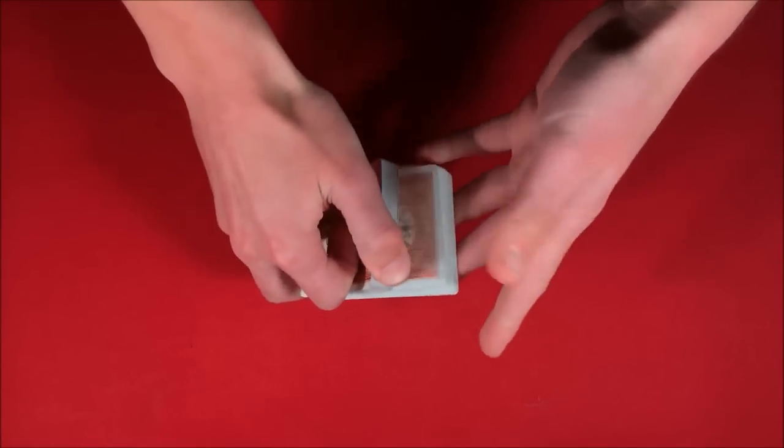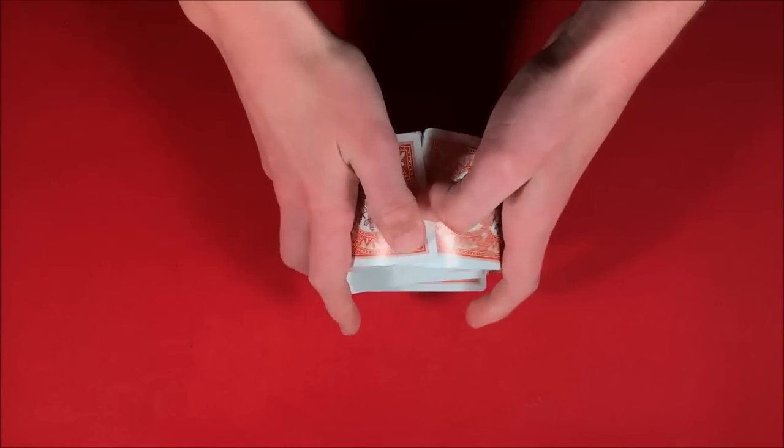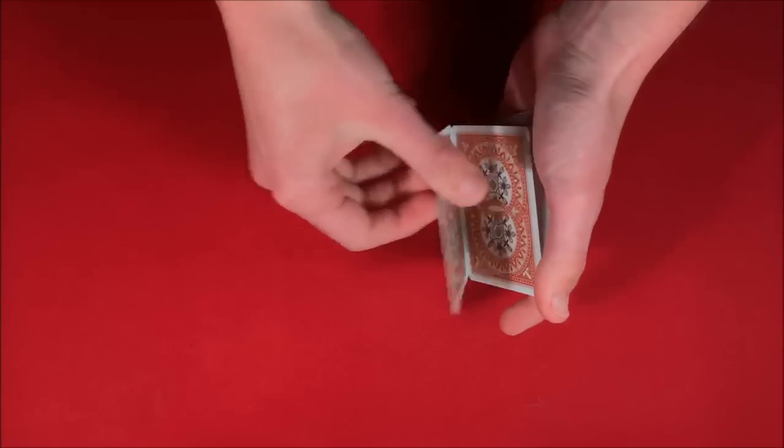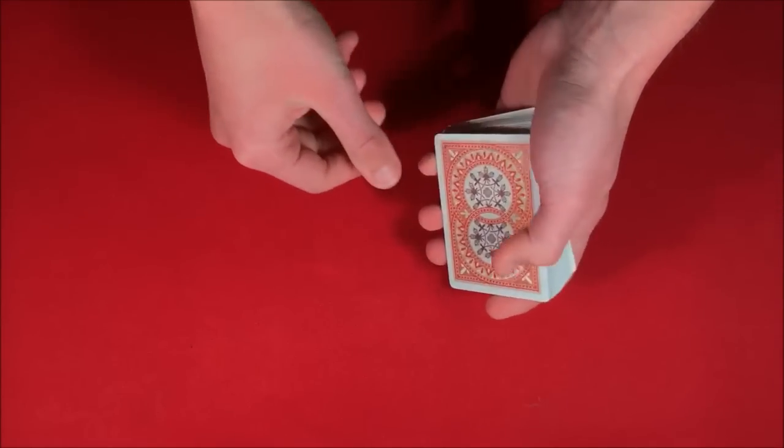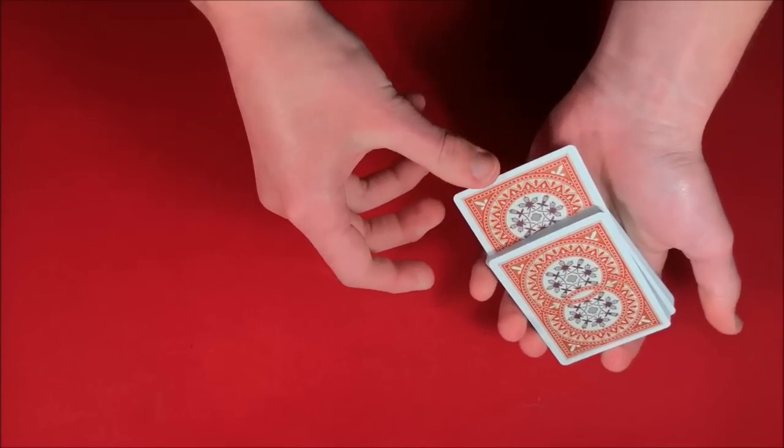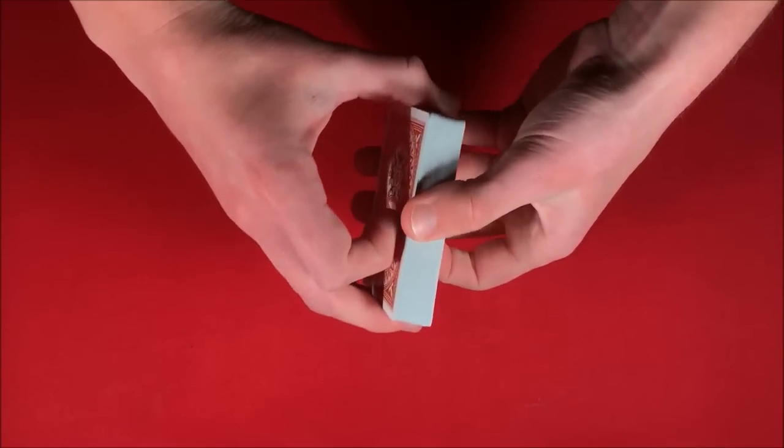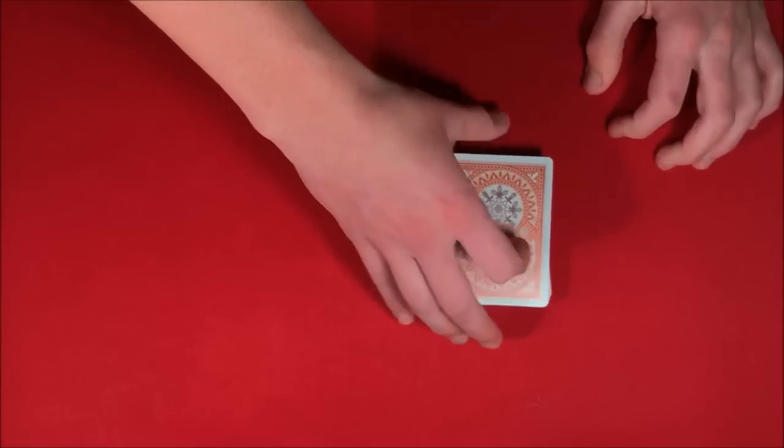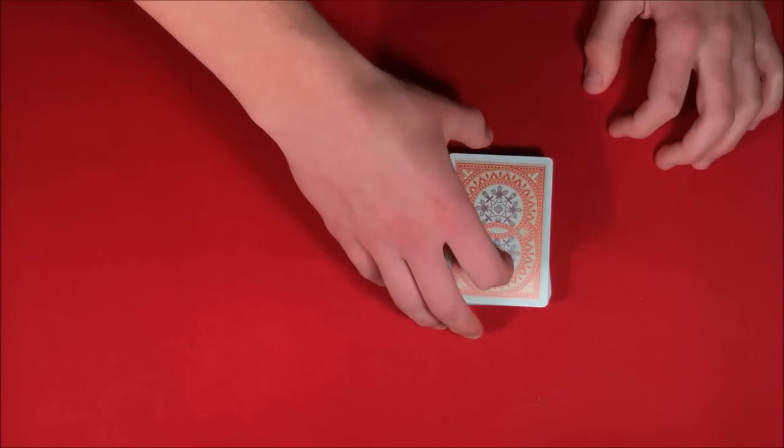Let's say you have the spectator shuffle up the deck, and then you take the top card, in this case the five of clubs. You tell them you're going to take the five, put it into the middle, and show them that you don't really know exactly where it is—it's somewhere in there.